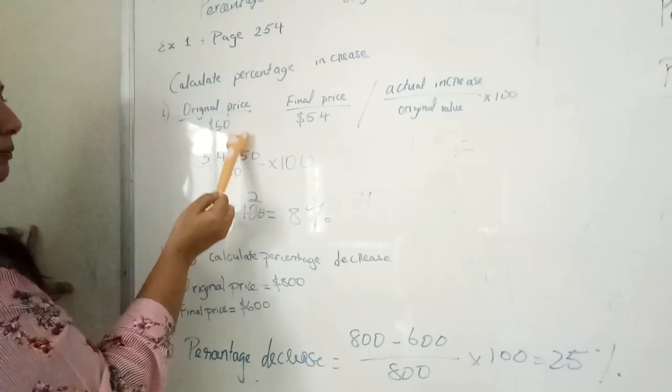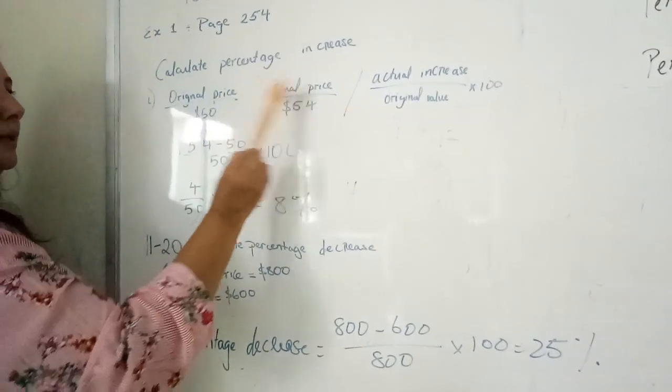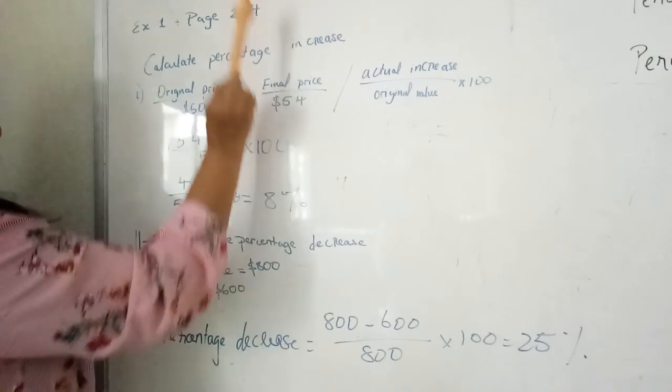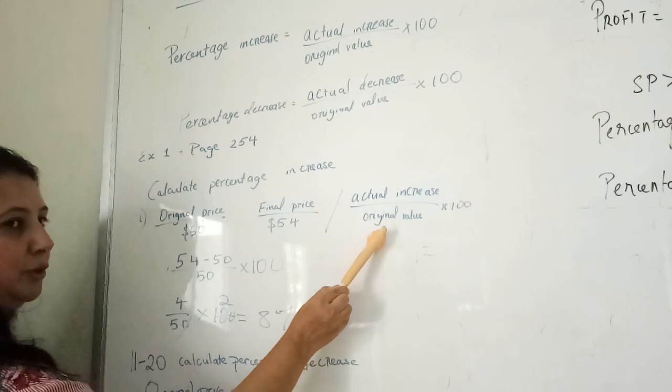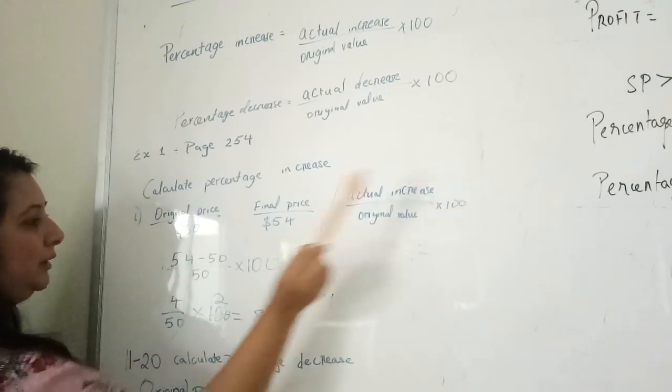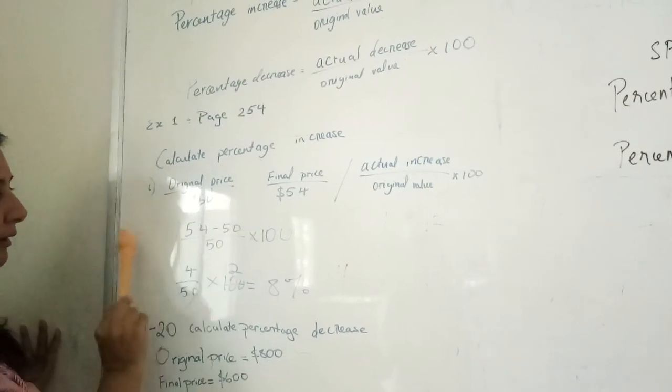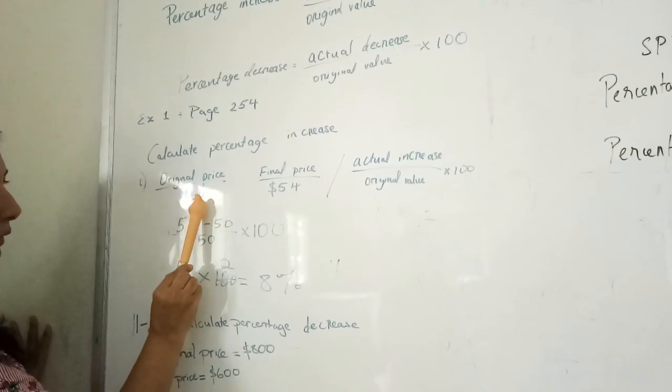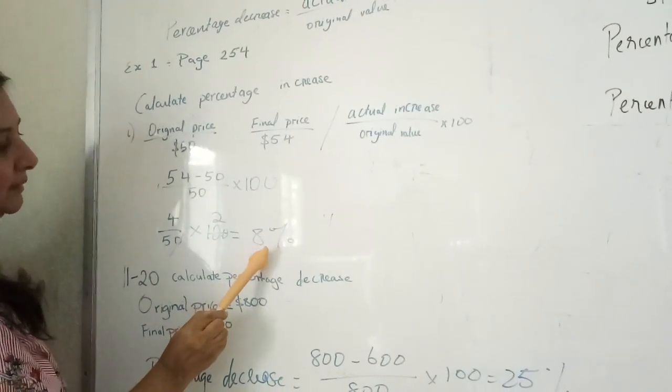The first question: original price is 50, the final price is 54, meaning there is an increase in the price. You will use the increase formula - actual increase divided by original value times 100. So 54 minus 50 divided by the original value of 50 times 100. The percentage increase is 10%.